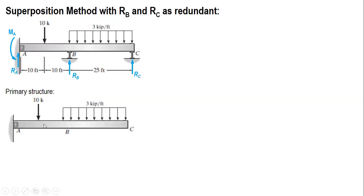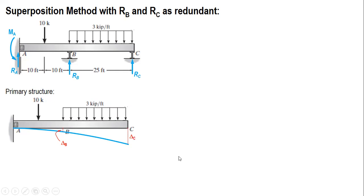Since the supports at B and C are removed, those points are free to deflect. When the actual loads are applied to the primary structure, the elastic curve deflects, and point B displaces by a distance we call delta_b, and point C displaces by a distance we call delta_c.